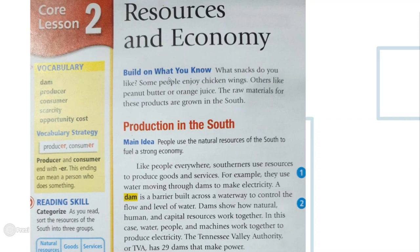Let's build on what you know. What snacks do you like? For example, peanut butter, chicken wings, or orange juice. The raw materials used to make these products — peanut butter, chicken wings, orange juice — are actually grown in the South. The word 'production' comes from 'produce,' so let's think about how they produce their goods and materials in the South.